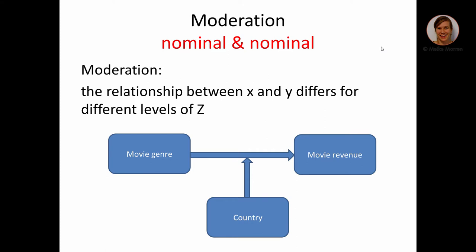Between two nominal variables — here's an example where the X variable is the genre of the movie, which can be horror or action, and we created a dummy variable to compare just those two genres. The moderator variable is the country, which in our case is Germany and Italy. We want to test whether a certain type of movie has a different effect on revenue in different countries.